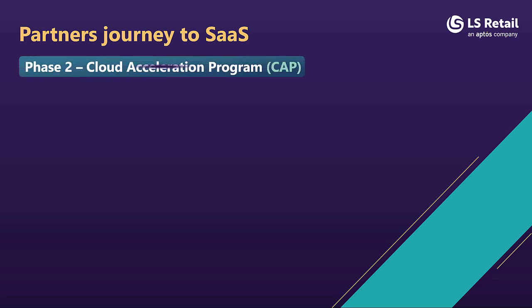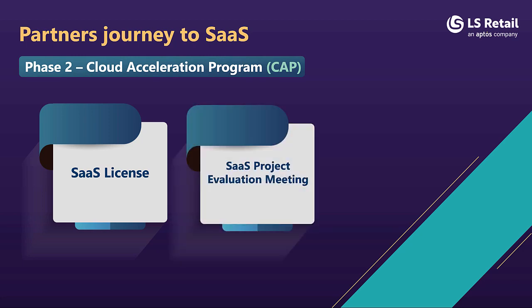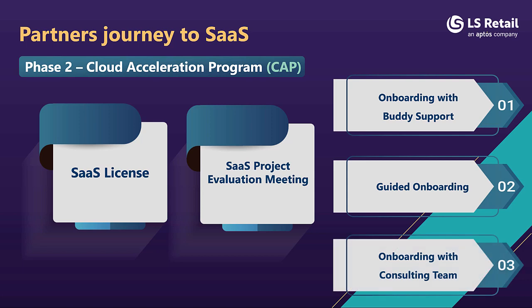The CAP membership is initiated when you purchase your first customer license in SaaS. We will contact you to invite you to an evaluation meeting for your project. Before the meeting, we will send you a template to fill out with details on your customer profile. In the evaluation meeting, you will meet with the CAP team, which includes a project manager from consulting, an onboarding buddy, the migration specialist, and a consultant. We will review the template and together decide upon the best way to support you through the project. We offer three paths through CAP, depending on the complexity of your project: onboarding with buddy support, guided onboarding, and onboarding with consulting.